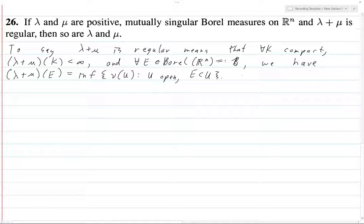So first, well, let's take care of the easy case first. We want to prove that μ and λ are regular by this definition. So for all k compact, what is λ(k) + μ(k)? λ(k) + μ(k) is equal to (λ + μ)(k), and this is less than infinity since λ + μ is a regular measure.